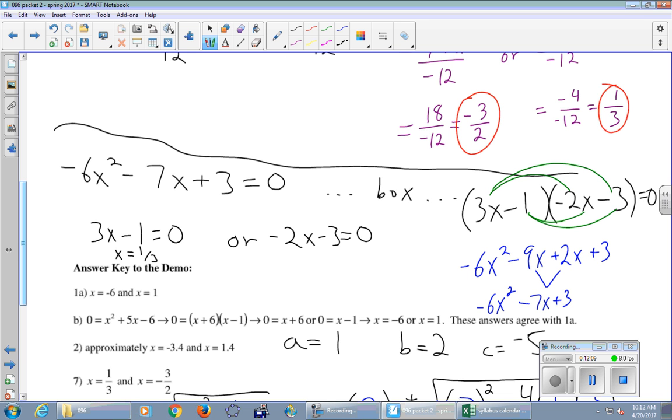Hey, X = 1/3 is exactly one of the quadratic formula answers. How do we solve this other equation? First we add the 3, and then we divide by negative 2. -3/2 is exactly the other answer from the quadratic formula. So if the thing factors, oftentimes that's the simplest way to solve the equation. But the quadratic formula will not lead you astray. It's going to work even if you could have factored from the beginning.